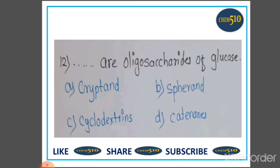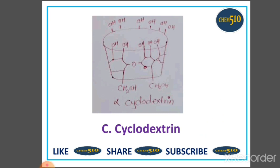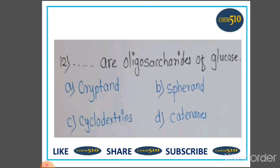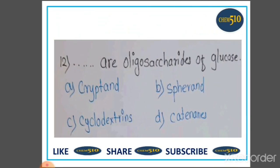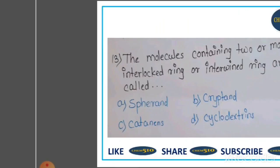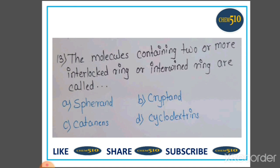Twelfth question: ____ are oligosaccharides of glucose. Option A: cryptands, B: spherands, C: cyclodextrin, D: catenane. Oligosaccharides of glucose are present in alpha-cyclodextrin, so cyclodextrin is the oligosaccharide of glucose. Option C is correct.